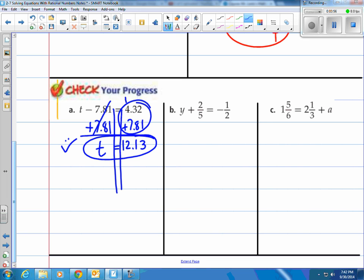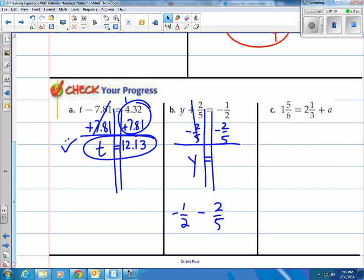All right, second one here. Same thing. Draw our train tracks to keep our middle organized and we have our left and right side. Do the inverse operation which is subtracting two-fifths. When I do that I have y left over here and that's equal to negative one-half minus two-fifths. Let me write that down here. Negative one-half minus two-fifths. Well I know what I'm going to do. I'm going to change that minus into adding the opposite. So I'm going to have the negative two on the top and a plus now.